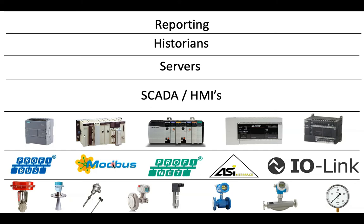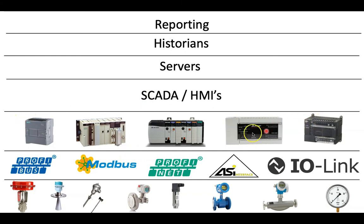Field networks is a layer that is strongly used with instrumentation as well. In some pictures of the automation pyramid, the field networks and instrumentation layers are combined, but I chose to separate them for simplicity. After the field networks layer, you get your control systems layer, which consists of your PLCs — you can call this the PLC layer.